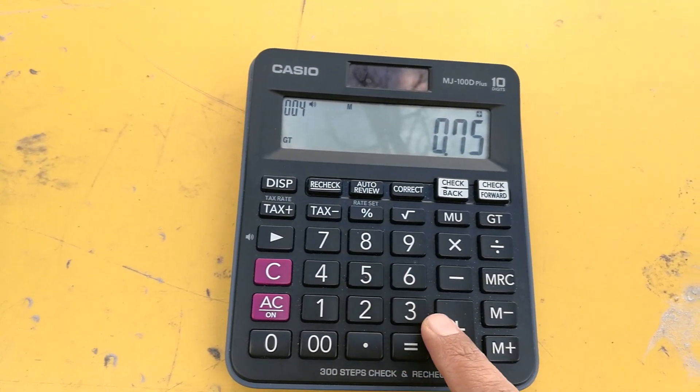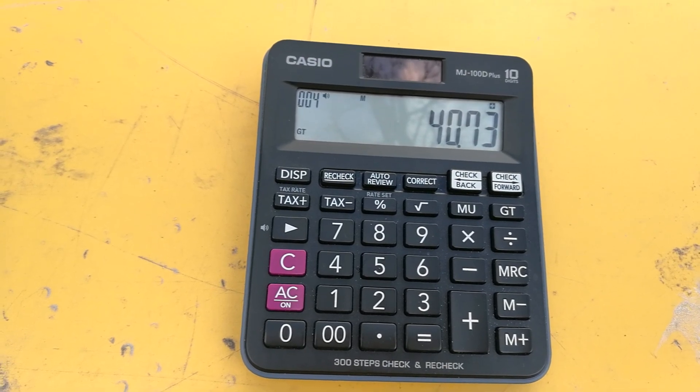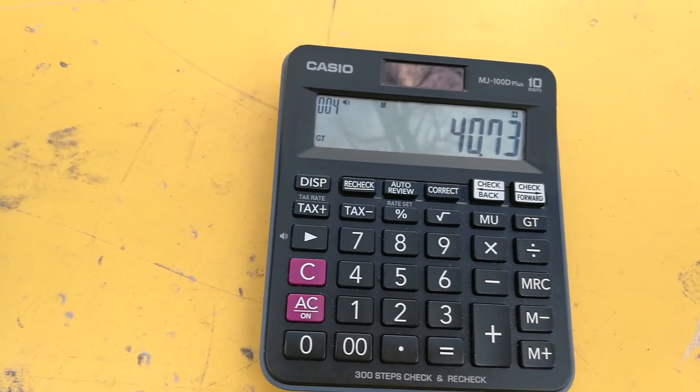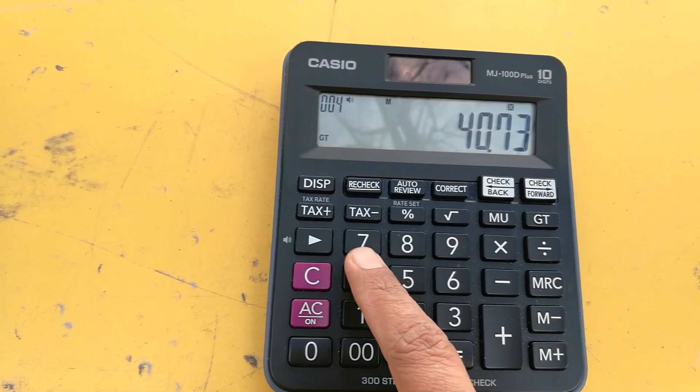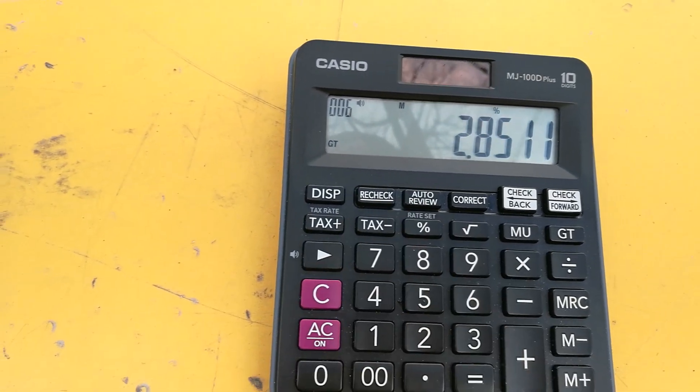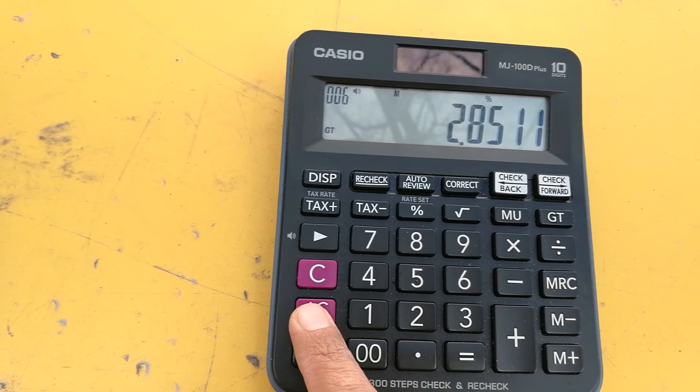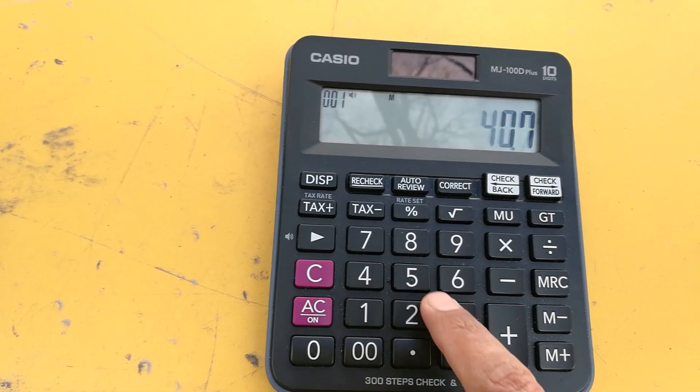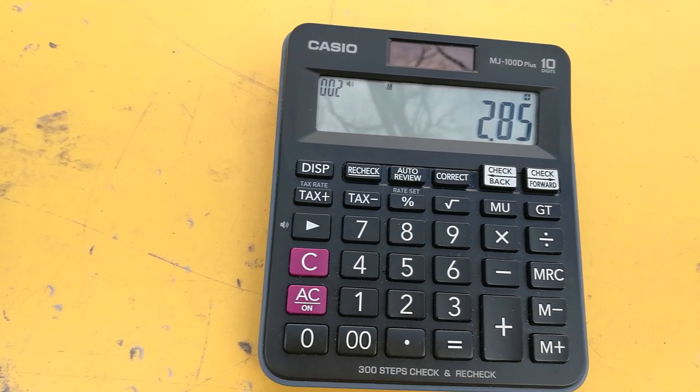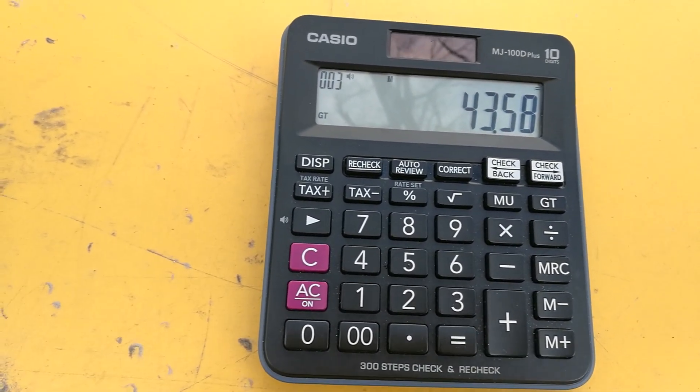So the total is 40.73 cents. Let's say this time we have a sales tax percentage of 7 percent. We multiply by 7 and press the percent button, so 2.85 is sales tax. Now we will add 40.73 with 2.85 and here is our answer, 43.58 with the 7 percent sales tax.